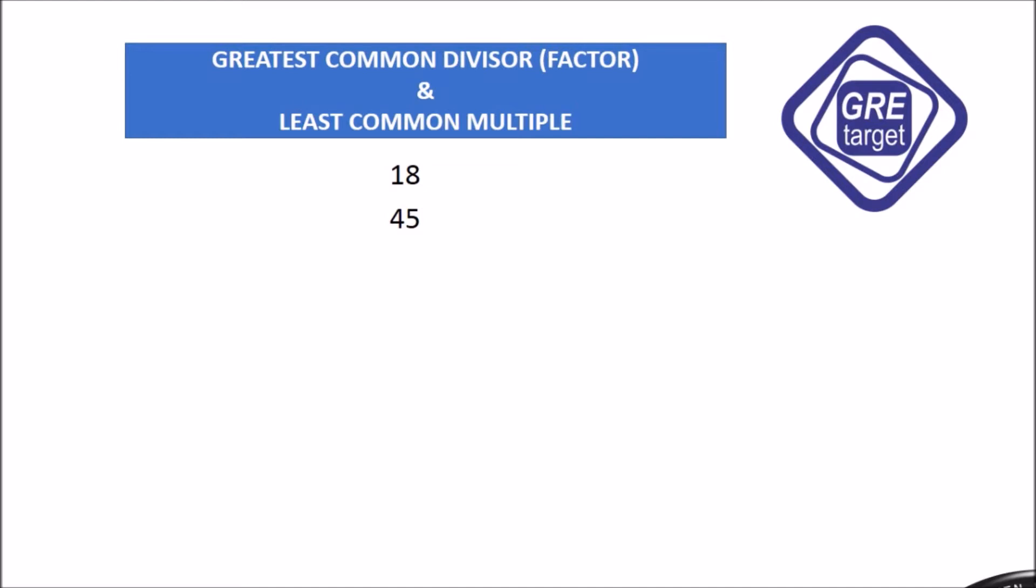Hello friends, welcome to GRETARGET. Our today's topic is greatest common divisor, factor, and least common multiple. There will be two numbers given to you. Suppose the numbers are 18 and 45. Let's start solving.